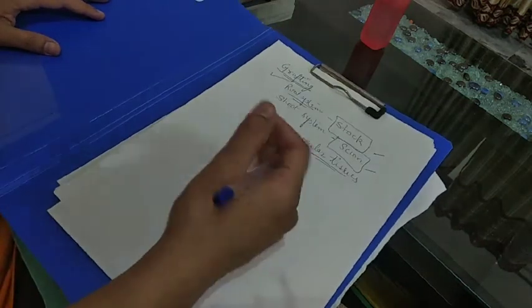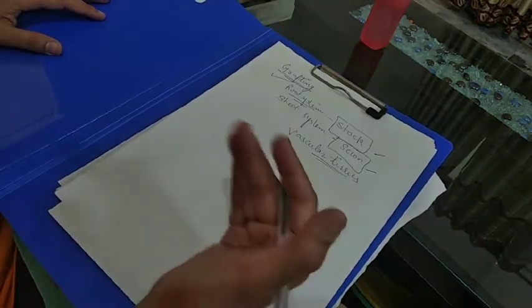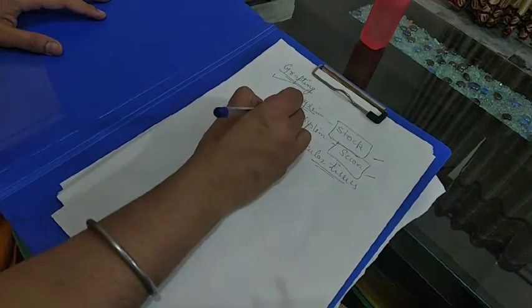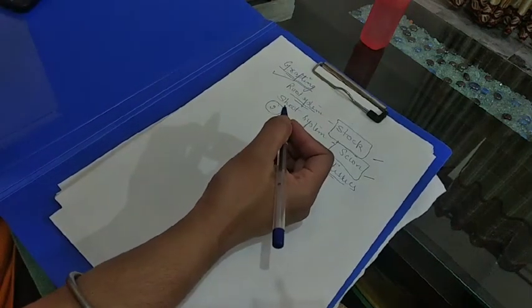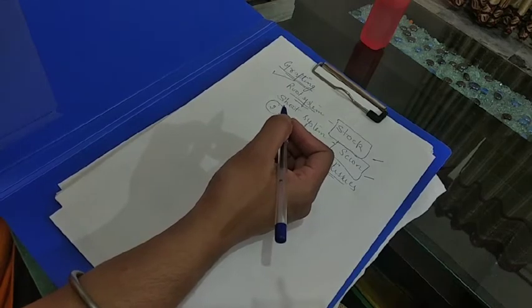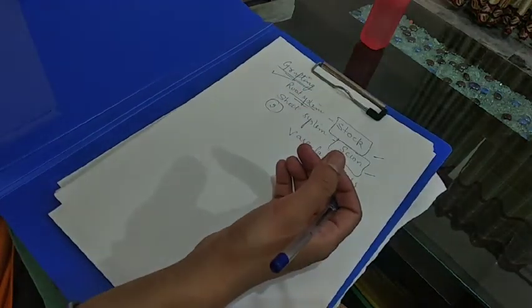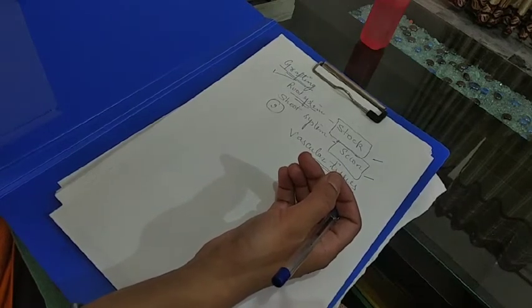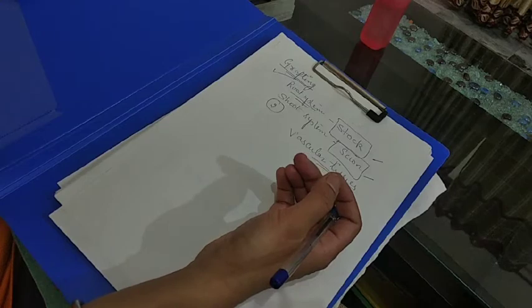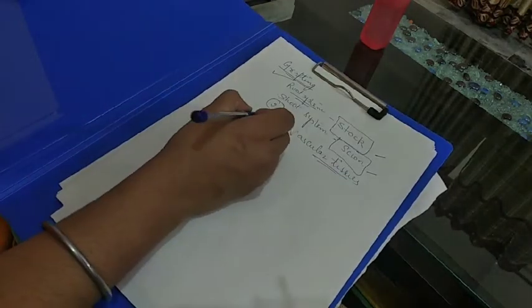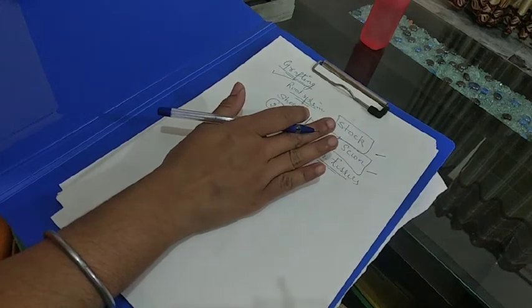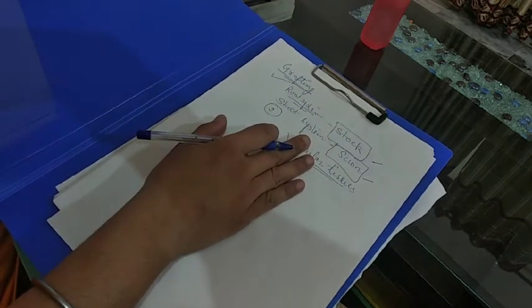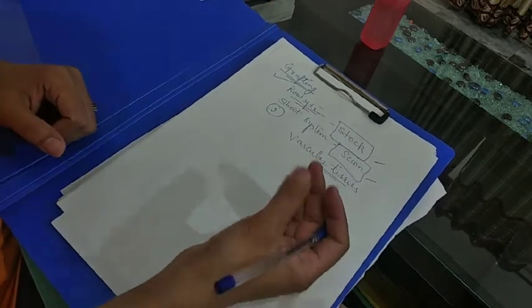Before proceeding to the next type of artificial method, let me give you some examples. You all know that we are fond of eating mangoes. Commonly there are hundreds of varieties of mangoes available. So we can take, for example, desi mango and one very common variety, Dusehri mango.